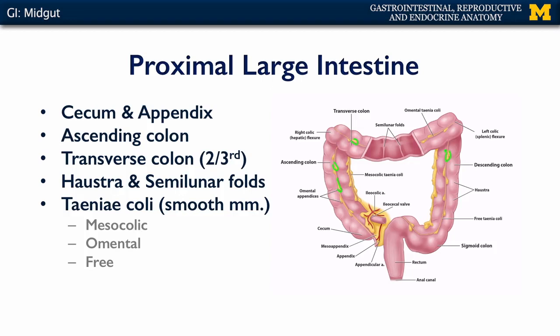Contractions and baseline stimulation of the taeniae coli lead to a sacculation or compartmentalization of the colon, causing sacs known as haustra. In between the haustra, there are elaborations of the mucosa known as the semilunar folds.